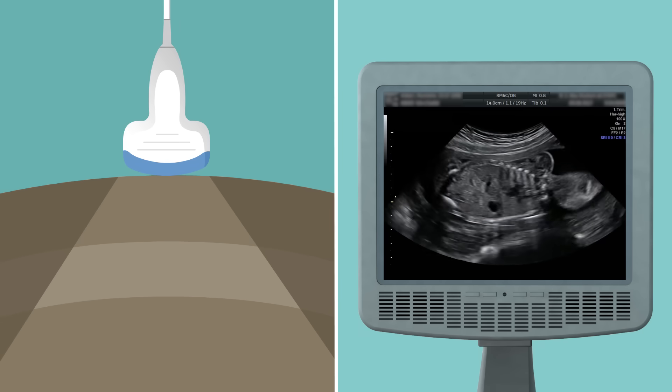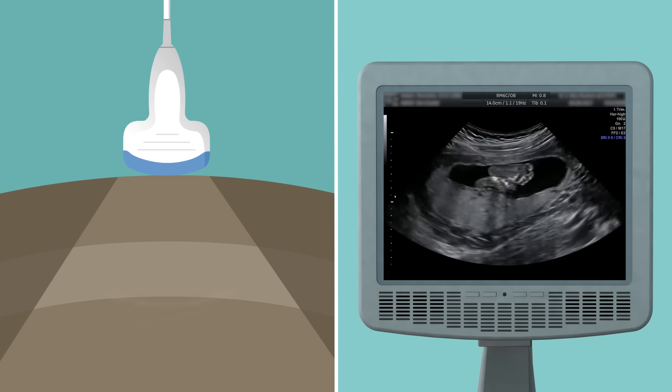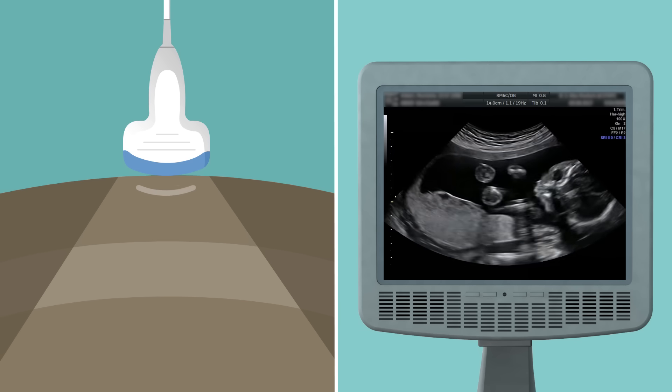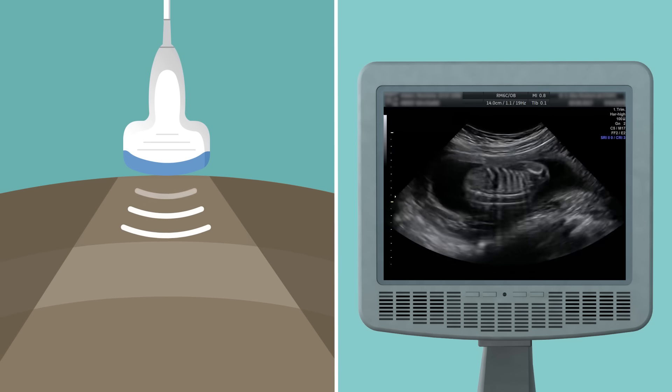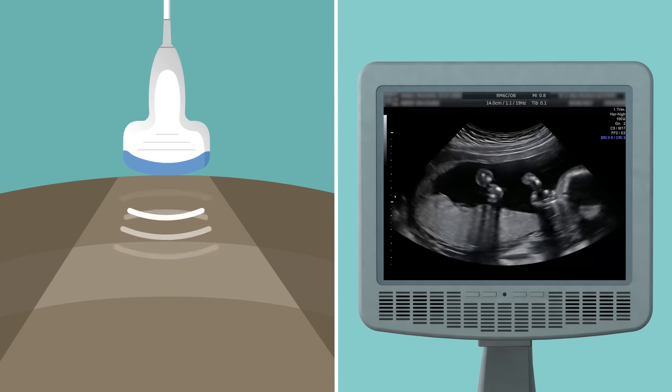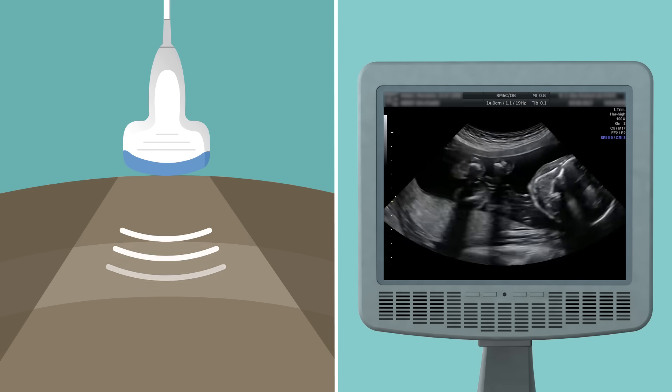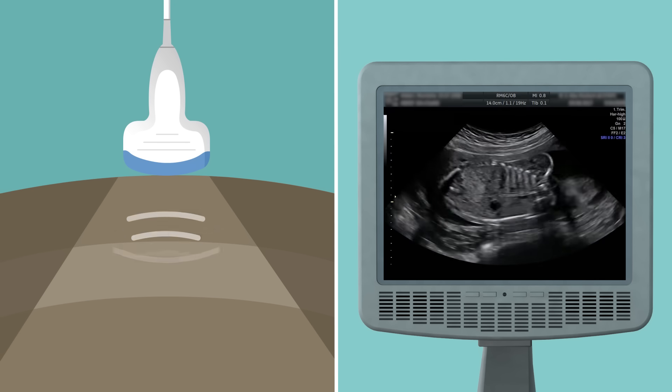The probe sends these ultrasound waves into the patient's body. At each boundary between different tissues or organs, some of the sound waves are reflected back to the probe, which records the position and strength of these echoes.